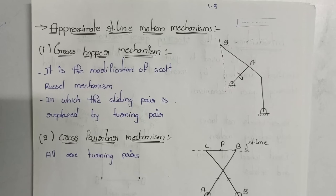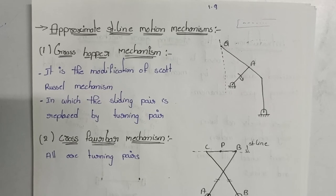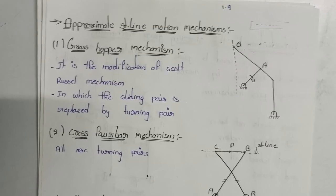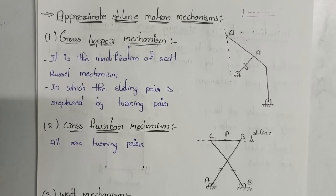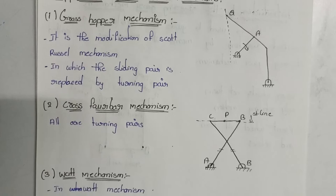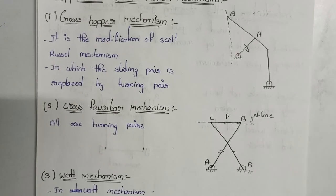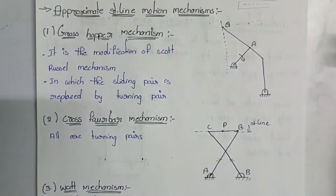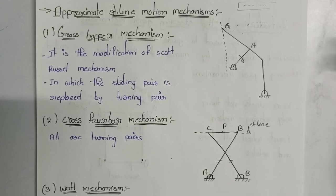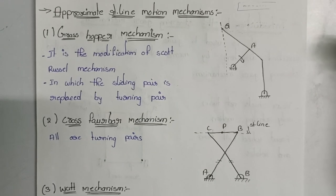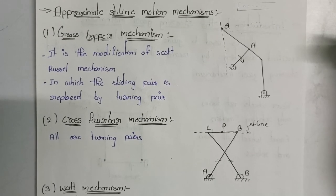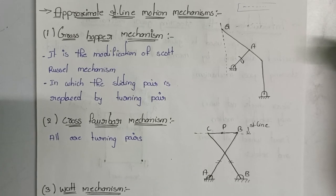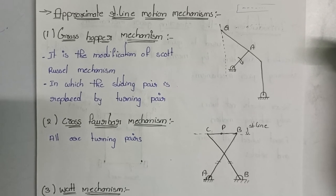In this video, there are four types of approximate straight line motion mechanisms. The three types covered here are the peculiar motion mechanism, heart mechanism, and the Scott-Russell mechanism. I will explain.